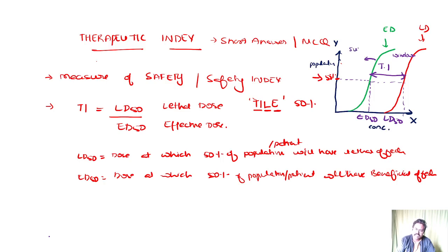So below this, what happens? There will be suboptimal response. And what will happen above this dose? There will be toxic effect, there can be lethal effect. Lethal effect is used in terms of animals, whereas toxic effect is in correspondence with humans, with the patients.